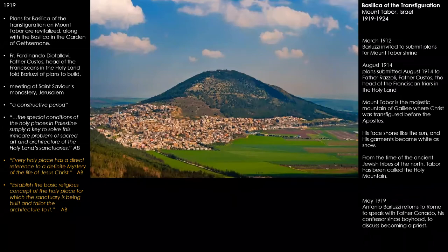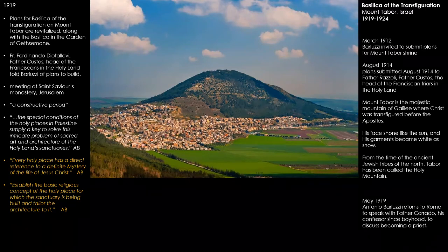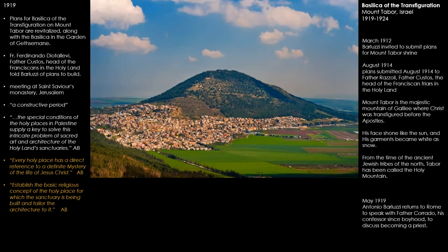We talked about the Basilica of Transfiguration, which was designed beginning in 1912 and 1914. It is on Mount Tabor, to the north of Jerusalem, and the bulk of the work happened between 1919 and 1924. This is a view of Mount Tabor — you can see how dramatically it rises up from the plains. Barluzzi was thinking about the design of each one of these churches. As he said: 'Every holy place has a direct reference to the definite mystery of the life of Jesus Christ' — establish the basic religious concept and tailor the architecture to it.